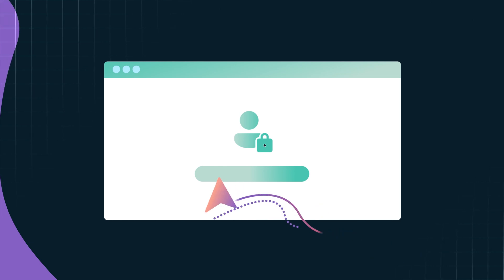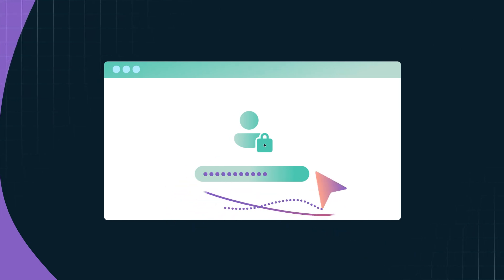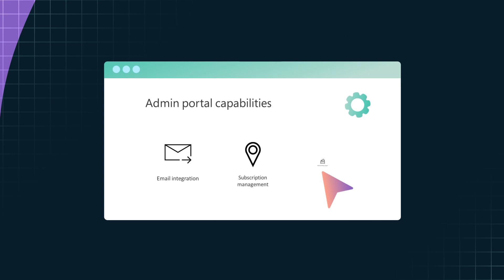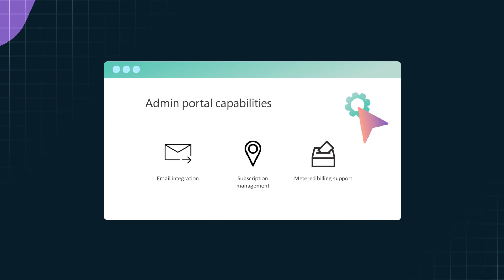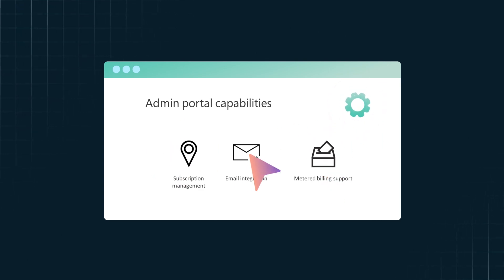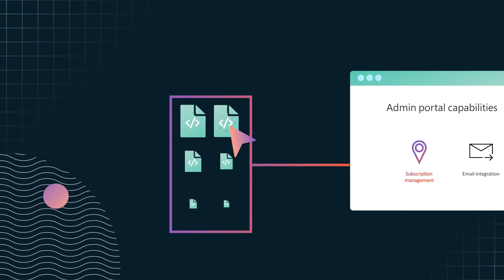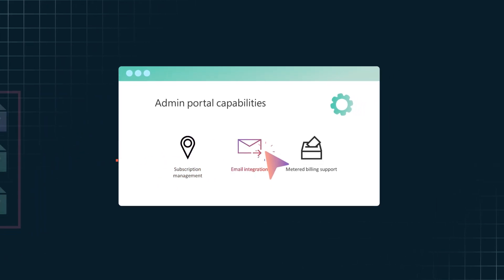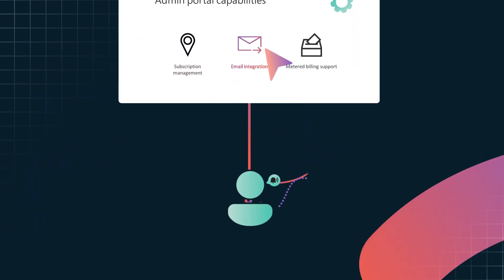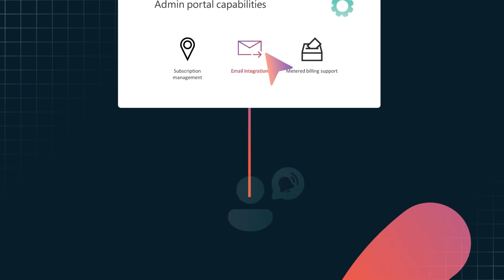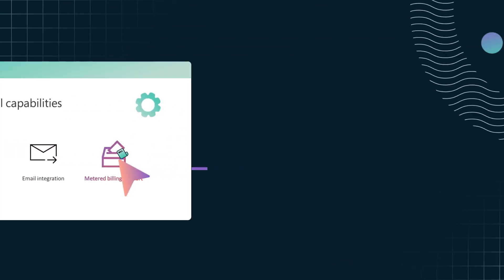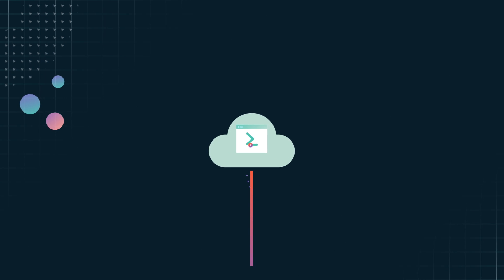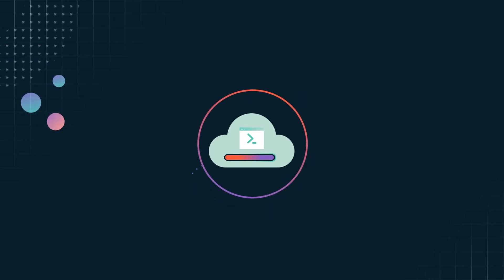The SAS Accelerator also provides a fully featured administration portal for the partner. There, you'll find a range of capabilities, including customizing the landing page to suit your needs, activating and managing customer subscriptions, email integration that notifies the right people when something changes for a subscription, and if your offer uses metered billing, you can invoke metered billing events from the portal.